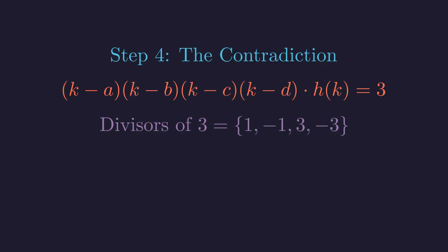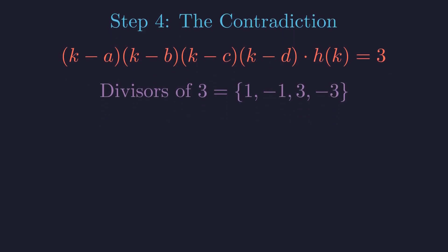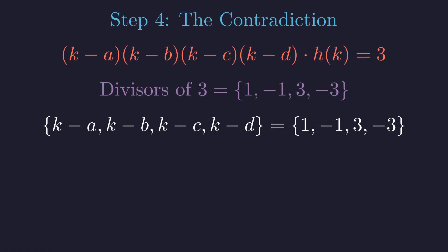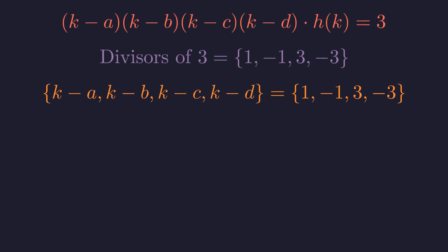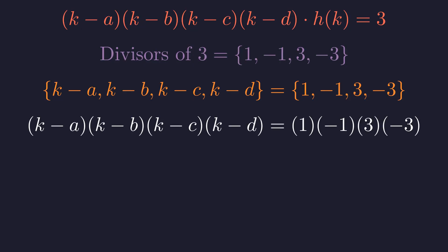Here's the crucial observation. There are exactly four distinct divisors, and we need exactly four distinct factors. So these factors must be precisely these four divisors, in some order. In other words, the set of our four factors equals the set of all divisors of 3. Now, let's compute what happens when we multiply all four of these divisors together. We get 1 times negative 1 times 3 times negative 3, and this equals 9.